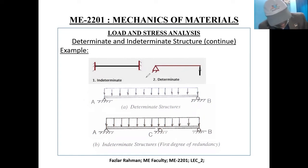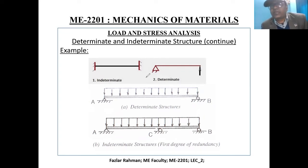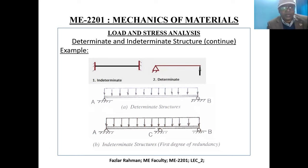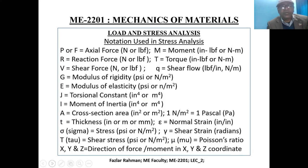For a bridge with 100 pillars, you have 100 reactions but you cannot solve it with just 3 equations. Those structures are called indeterminate structures. Right now we are talking about beams, and you need to know the notation — all the notations we will use when studying beam and solid mechanics.